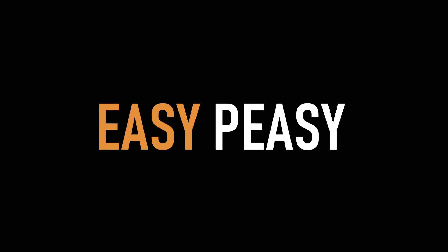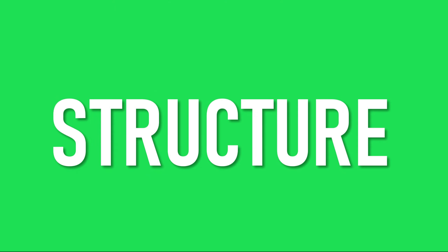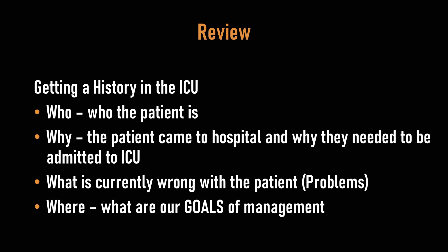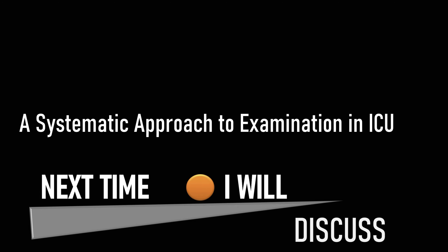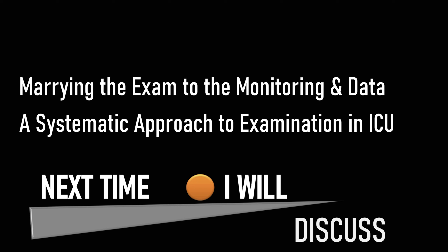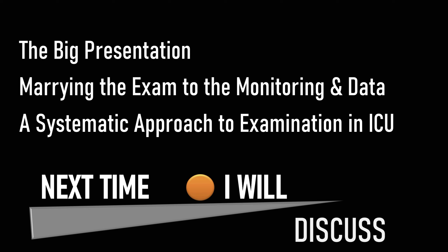So all of that is easy peasy. The key thing is that you have some form of structure for how you put together the history and present the history. So let's quickly review this tutorial. In this tutorial, I discussed how you get a history in the ICU, and you follow four W's: who the patient is; why the patient came to hospital and why they needed to be admitted to ICU; what is currently wrong with the patient — a problem list; and where are we going with this patient — what are our goals of management. In the next tutorial, I'm going to cover physical examination of the patient in the ICU. This also needs to be systematic. We're going to marry the exam to the monitoring and data of that patient, and then I will go through how you do the big presentation, where you put the history, the exam, and the data together. I'll see you then, and I guarantee you'll learn something.